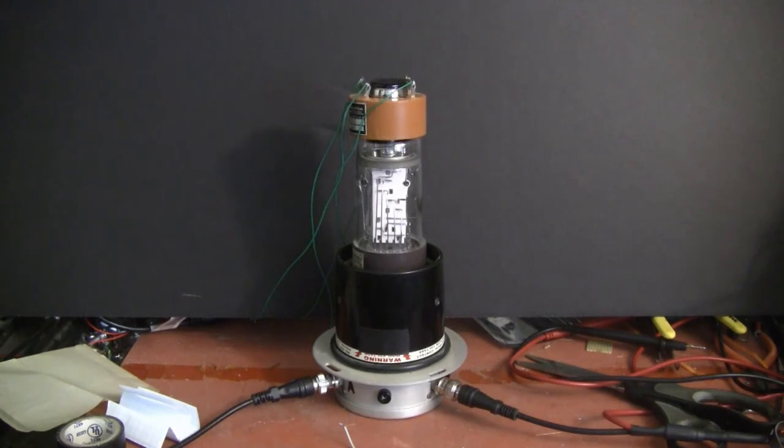They would actually install these tubes in satellites. They have a special version which doesn't have the Bakelite base and may not even possess the glass envelope for weight savings because once it's in space there's no air out there and the tube operates just fine.